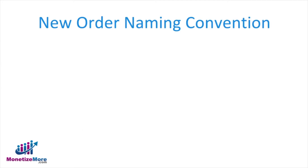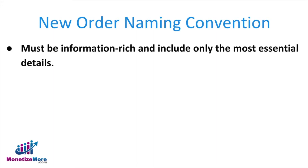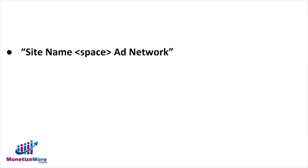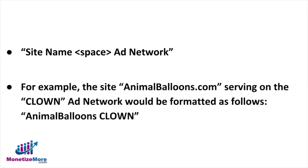First up is the naming convention when creating a new order. We've found that naming conventions must be information rich, yet include only the most essential details. Arguably the most general and most important element of a new order is the site name. We've found labeling the order using the following format most useful through the entire workflow of a project through to reporting: site name, space, ad network. For example, the site animalballoons.com serving on the Clown ad network would be formatted as: Animal Balloons space Clown.